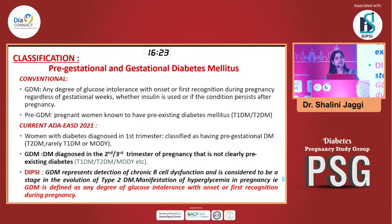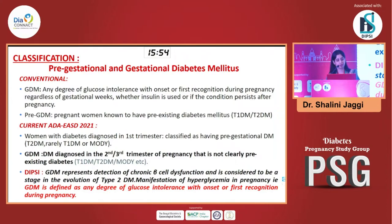The ADA and WHO tried to bridge this gap and clarify. What they said was if you were diagnosing diabetes in the first trimester of pregnancy, most likely she definitely has a particular dysglycemia that was happening pre-conception. That is why they labelled this as pre-gestational diabetes. Gestational diabetes was the term reserved exclusively for diabetes diagnosed in the second or third trimester. Cutting back to India, a lot of confusion needs to be simplified, and this is where DIPSI has come in and taken the leadership role.